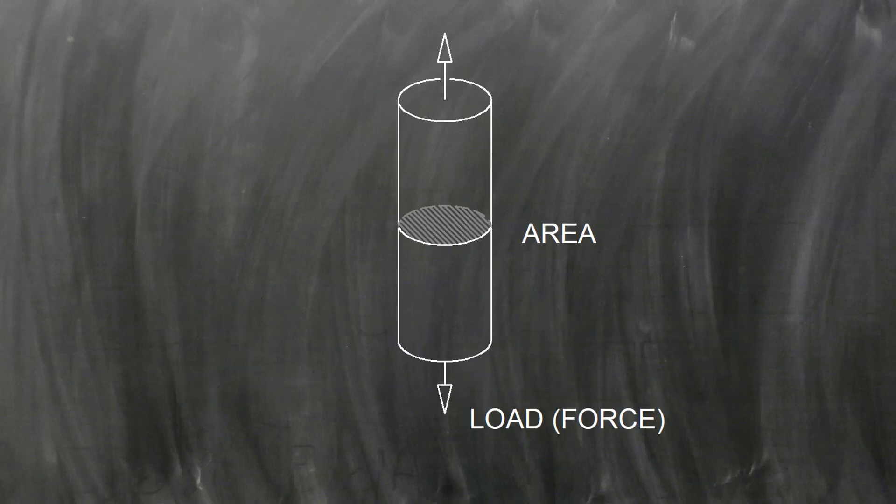When we consider the load divided by the cross-sectional area of the supporting object, we're talking about a thing called stress. Stress is force per unit area. That means the force divided by the area.